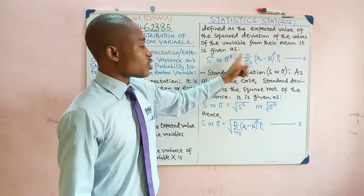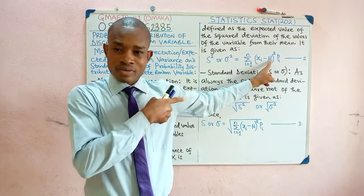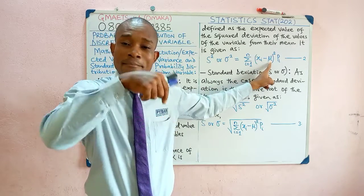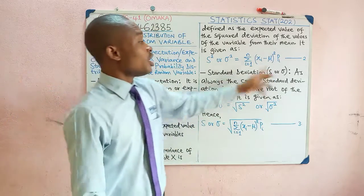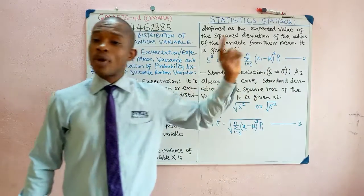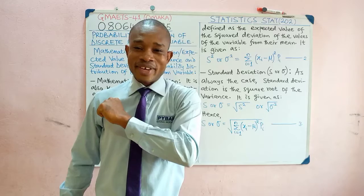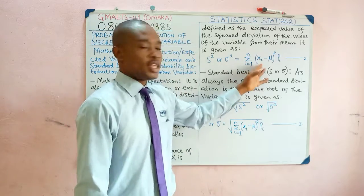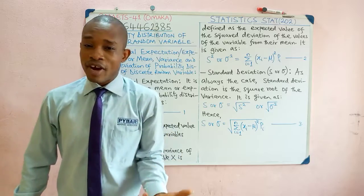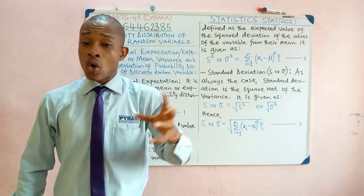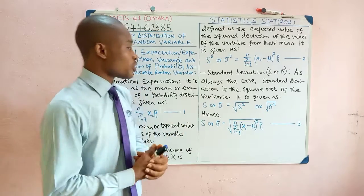Look at the formula: summation of (xi minus μ) squared times pi. Take note that μ is the expected value, which means the mean in this case — just like you have x-bar under measures of dispersion. We square it and multiply by the probability, which replaces frequency. Once again, there is no denominator here, unlike measures of dispersion where you divide by the summation of frequency or n.